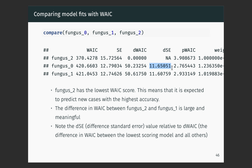Intuitively this makes sense: the way the treatment works is by affecting fungus, but it's not 100% effective, so exposure to treatment doesn't guarantee there won't be any fungus. Actually just learning about the fungus directly provides more information for predicting plant growth. The problem is, if we were interested in learning about the efficacy of the treatment, we would be dropping all information about treatment efficacy by conditioning on fungus. Information criteria don't care about causation — they only care about prediction. So you have to think really carefully about what your goal is when you use these tools.